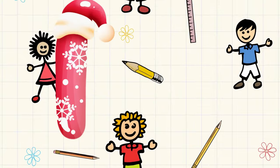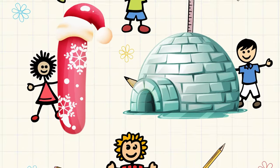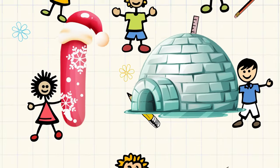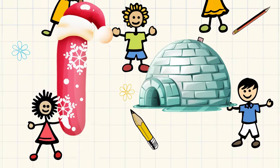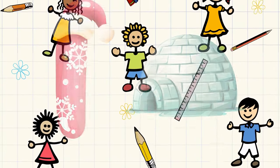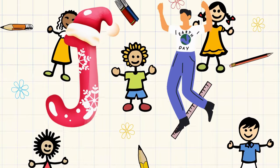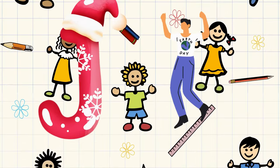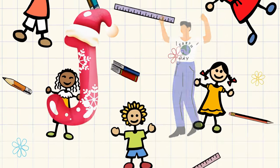I is for igloo, i-i-igloo. J is for jump, j-j-jump.